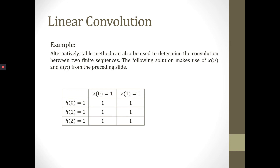Alternatively, besides the graphical method, we can also use the table method to determine the convolution between two finite sequences. We use the values given previously for Xn and Hn in this table. On this side, we include the value of Hn given in the question. For H0 it is equal to 1, for H1 it is also equal to 1, and H2 equal to 1. On the top, we write the value of the Xn signal.